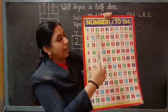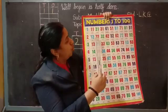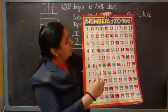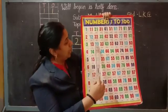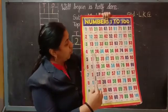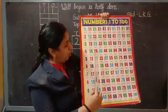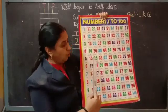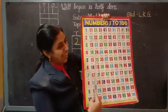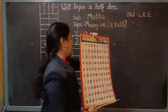2-1, 21. 2-2, 22. 2-3, 23. 2-4, 24. 2-5, yes, 25. Very good.